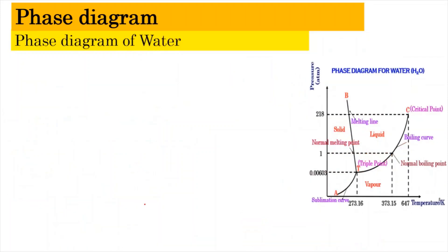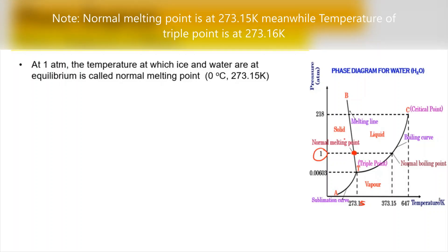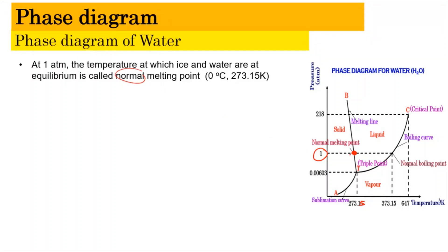Now we're going to look into the phase diagram of water. At the pressure of 1 atm and at 0 degrees Celsius or 273.15 Kelvin, we can see that it exists as solid-liquid in equilibrium, meaning it is in between ice and water. This happens at the normal melting point, and 'normal' here refers to 1 atm.